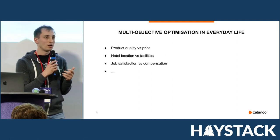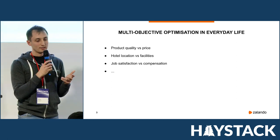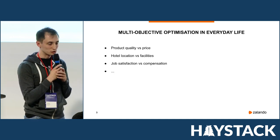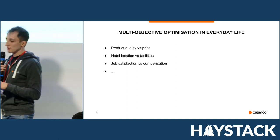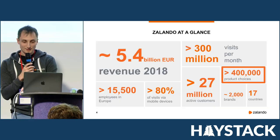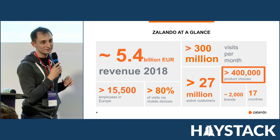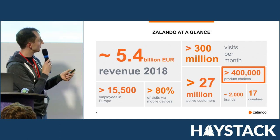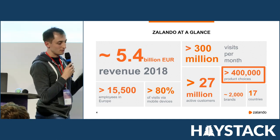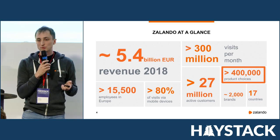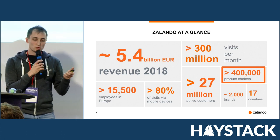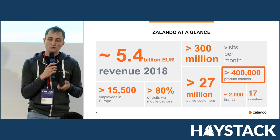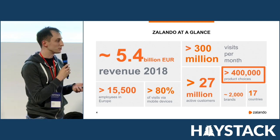Not surprisingly, while working on the ranking of the catalog at Zalando, we also encountered a multi-objective optimization problem. I want to show you a slide we often show — the catalog of Zalando is very huge, and the way we sort the articles when users are shopping on the website has a great impact, both on the user experience and on the business KPIs.